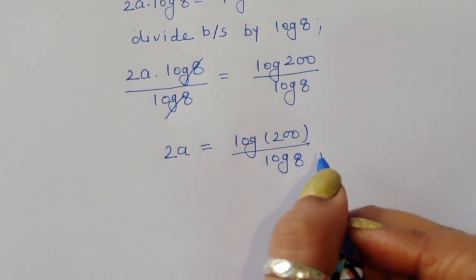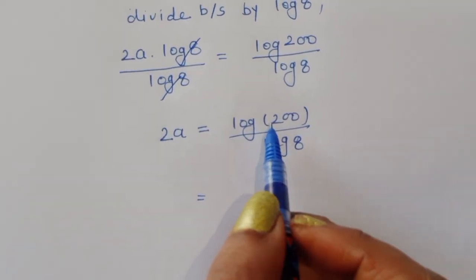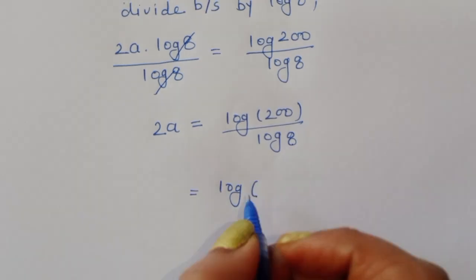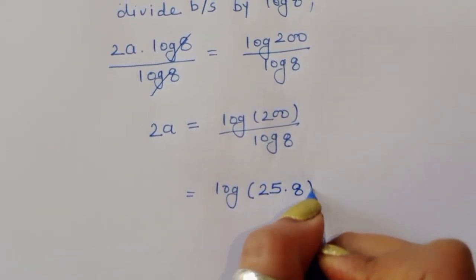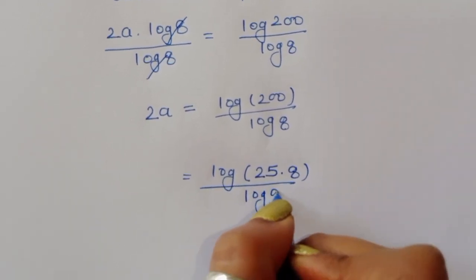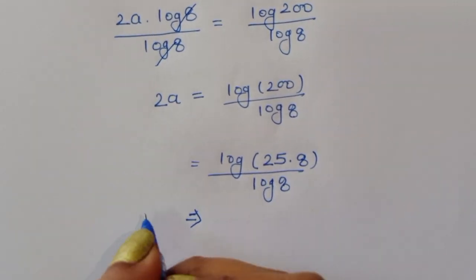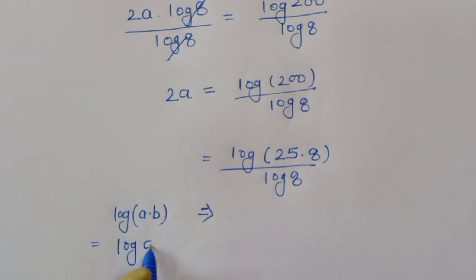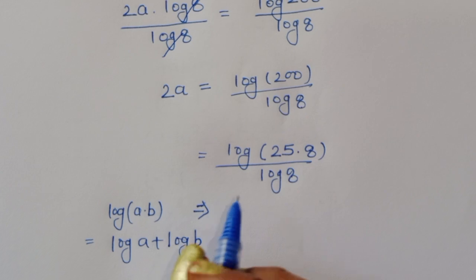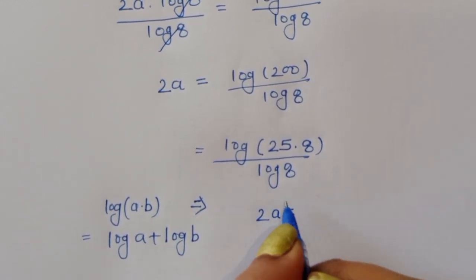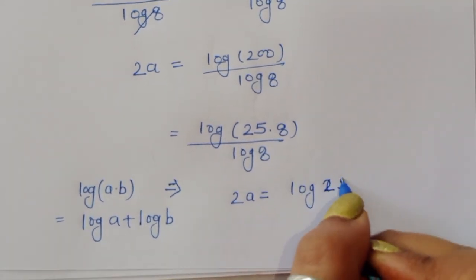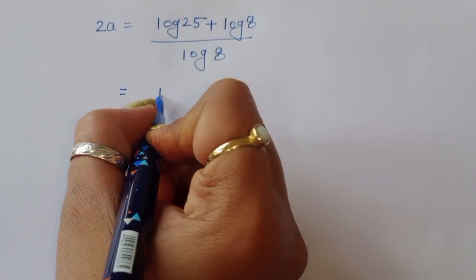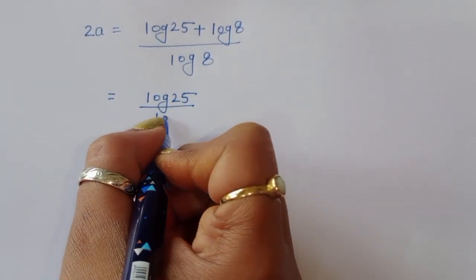Now, the factors of 200: we can write 200 as 25 times 8. So log of 200 becomes log of 25 times 8 divided by log of 8. Using the formula log of a times b equals log of a plus log of b, we get 2a equals log of 25 plus log of 8, all divided by log of 8.